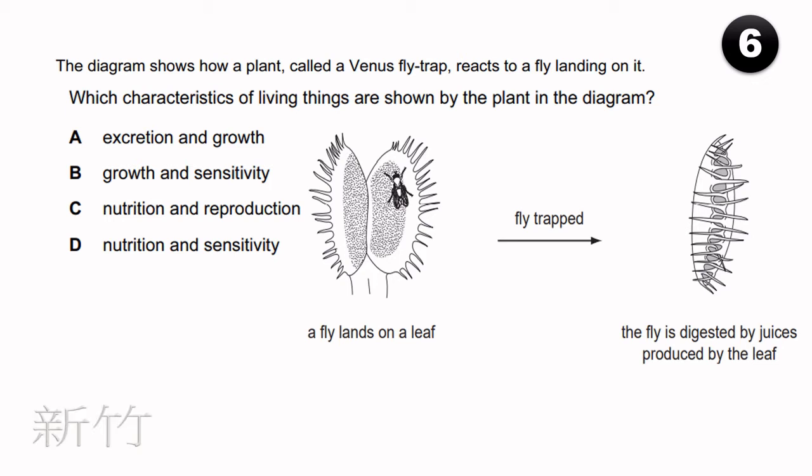The diagram shows a plant called a Venus fly trap reacting to a fly landing on it. Which characteristics of living things are shown by the plant in the diagram? Nutrition and sensitivity.